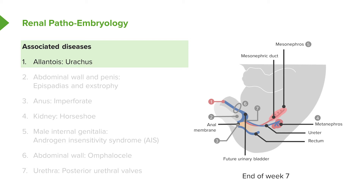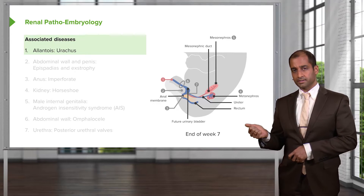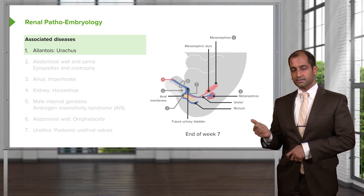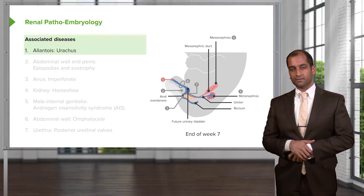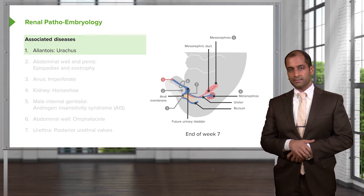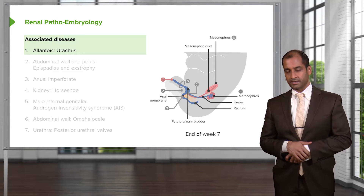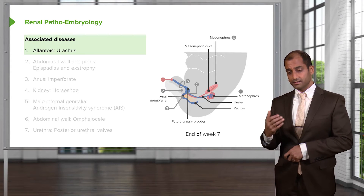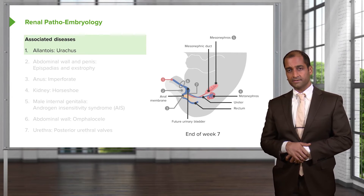The remnant of it is the urachus. If it was to remain and there was enough irritation taking place, there is a particular cancer that you can develop in the urinary bladder with a persistent urachus. Because this is glandular in nature, it would actually be adenocarcinoma of the urinary bladder.